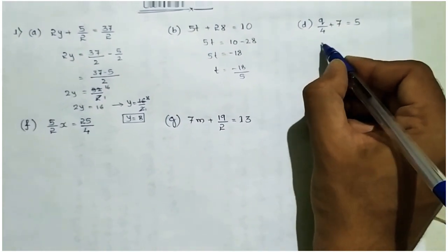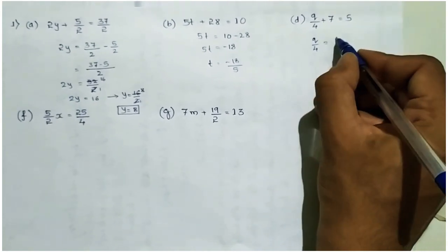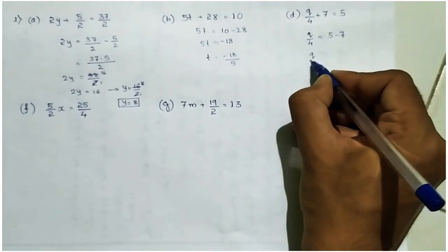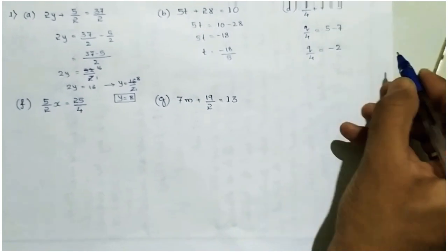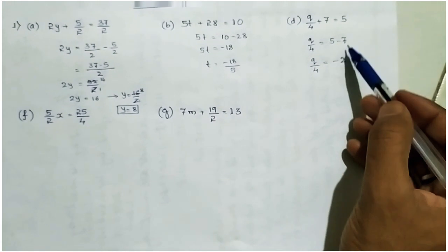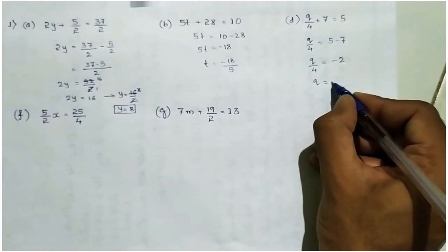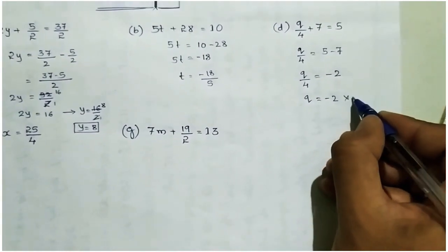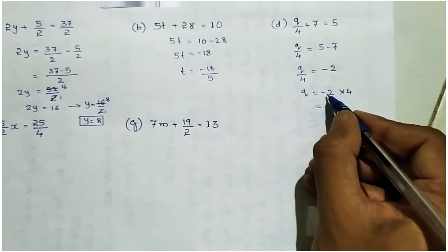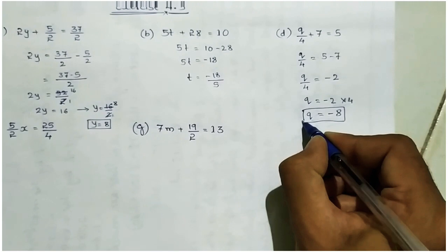Now d: q by 4 plus 7 equal to 5. Keep q by 4 on the left side and take 7 to the right side — it becomes 5 minus 7, so q by 4 equal to minus 2. Take 4 to the right side — it becomes multiplication — so q equal to minus 2 into 4. Minus into plus is minus, 2 fours are 8, so q equal to minus 8.